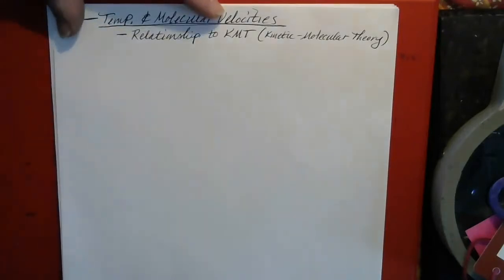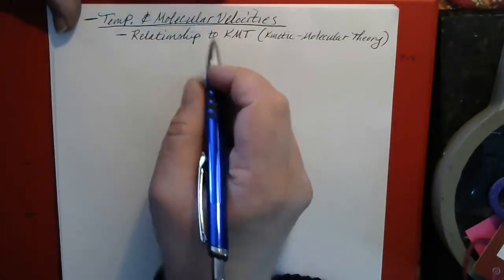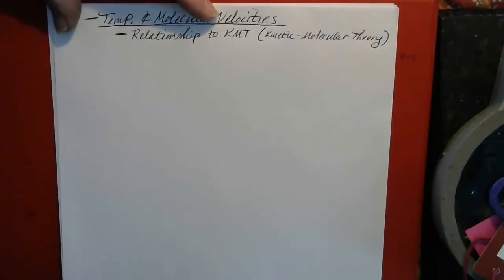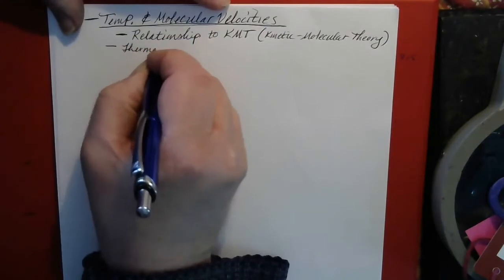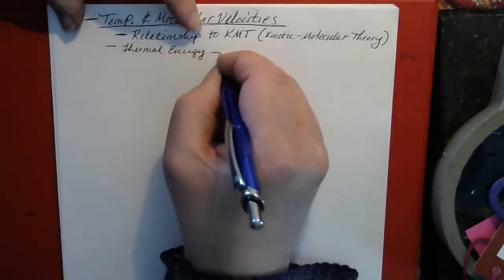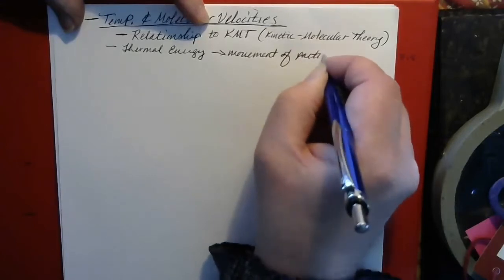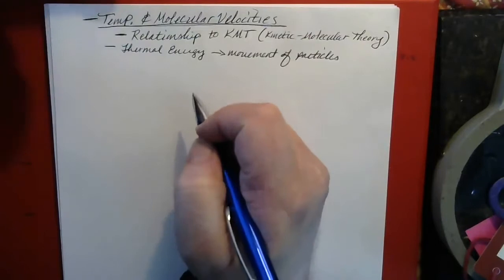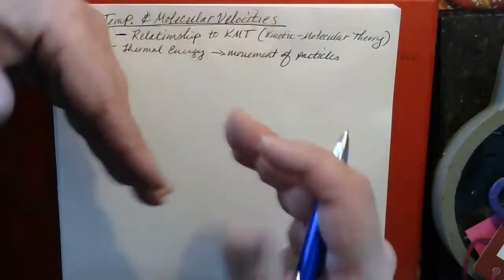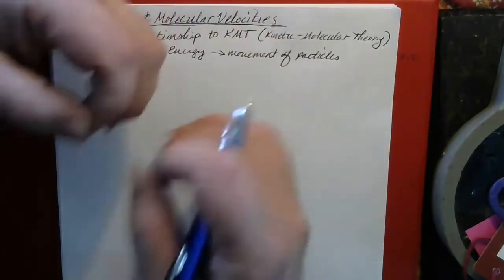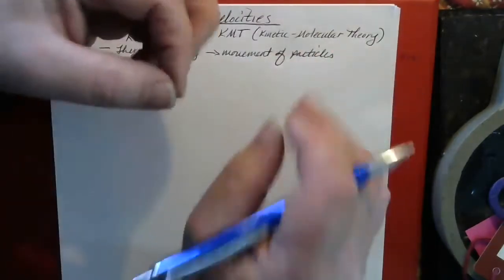We are now up to the point where we need to talk about temperature and molecular velocities. Thermal energy results in movement of particles, and that's generally true of any material in any state of matter. In liquids and solids, the particles are basically stuck to each other through intermolecular attractions, so they are more or less fixed in place, and most of that movement takes the form of vibration in place. In solids especially, the particles don't really move around and past one another — they vibrate in place.